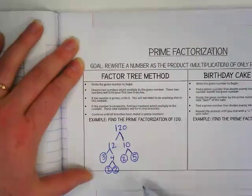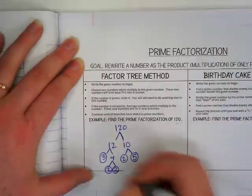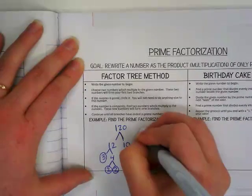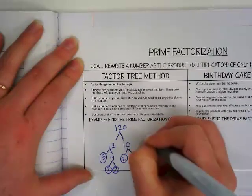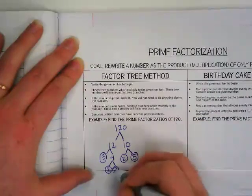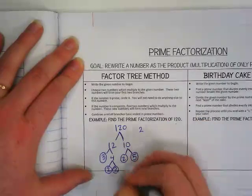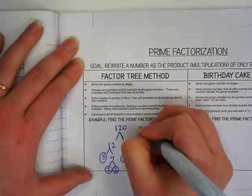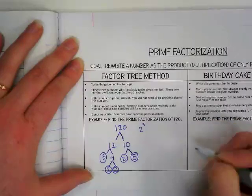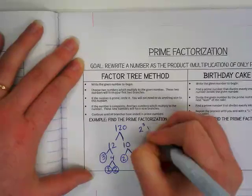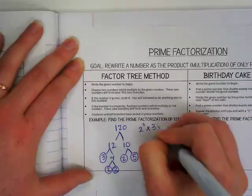I always like to start with my lowest factors first, so I write 2. There are three 2s, so I write 2 to the power of 3, times 3, times 5. And that is our prime factorization of 120.